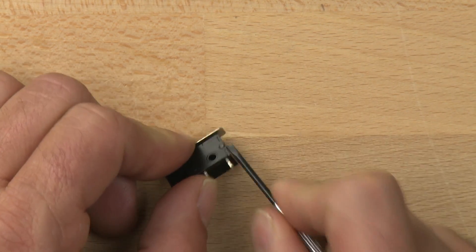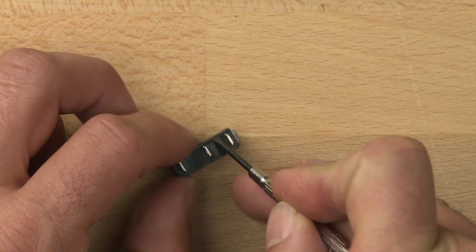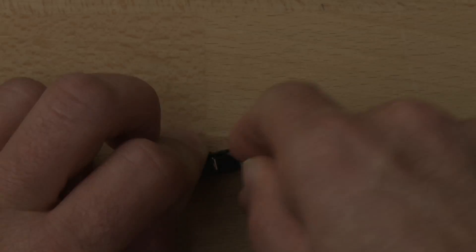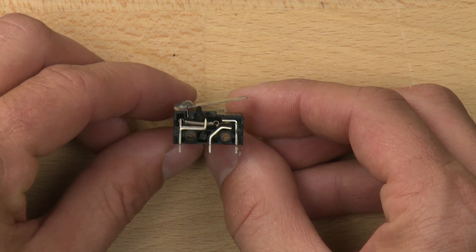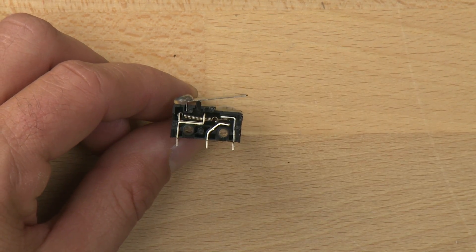We're going to take a small watchmaker screwdriver and pry open the housing. So this is the inside of our lever switch. You can see it's all taken apart for us.